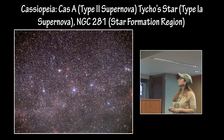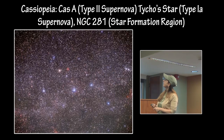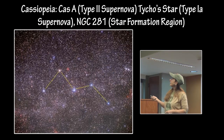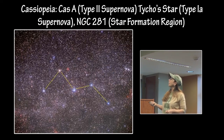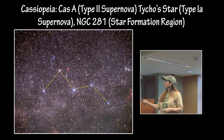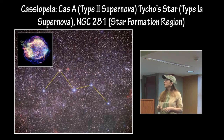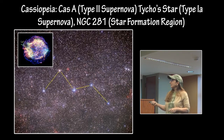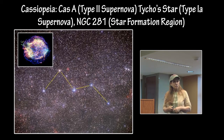Then we have the constellation of Cassiopeia, and within this constellation we have all kinds of stuff. One is the Cassiopeia Type 2 supernova event — a massive star that collapsed and left behind a remnant and a neutron star in its core.